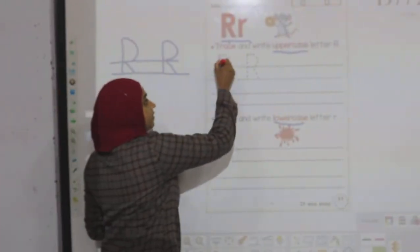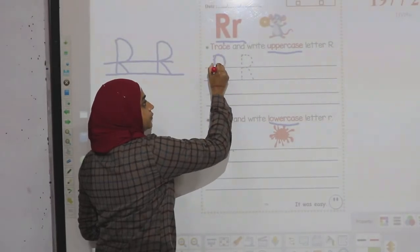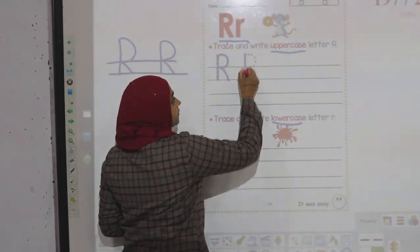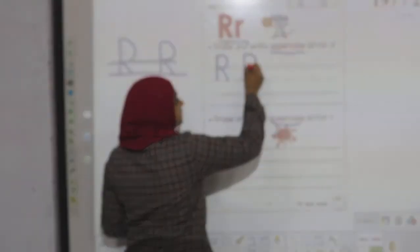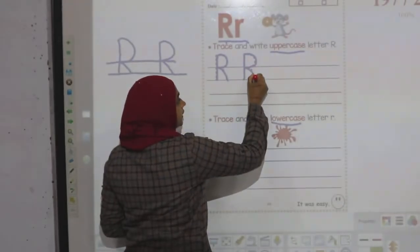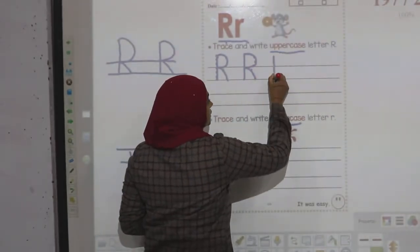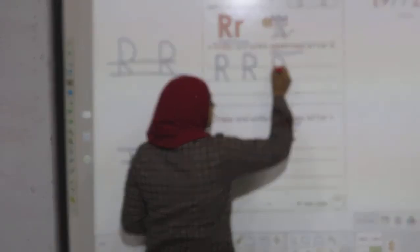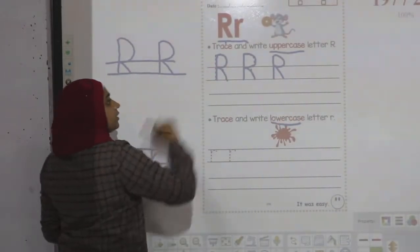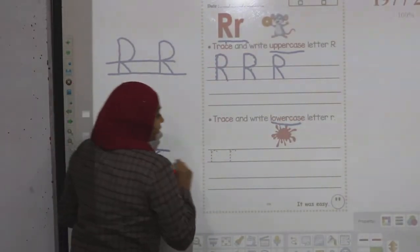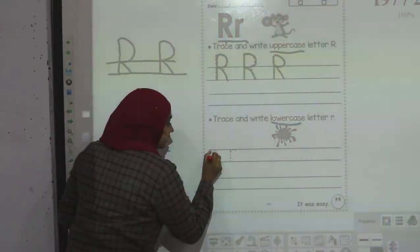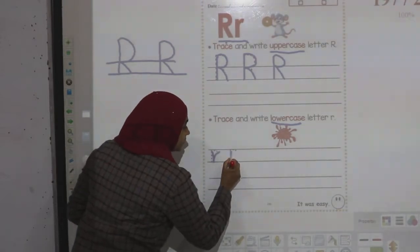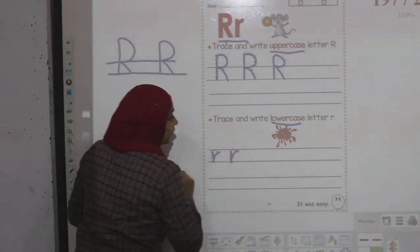Let's practice uppercase R again: down, stick, semi-circle, and slash. And lowercase R: down, stick, up, and curve. Down, stick, up, and curve.